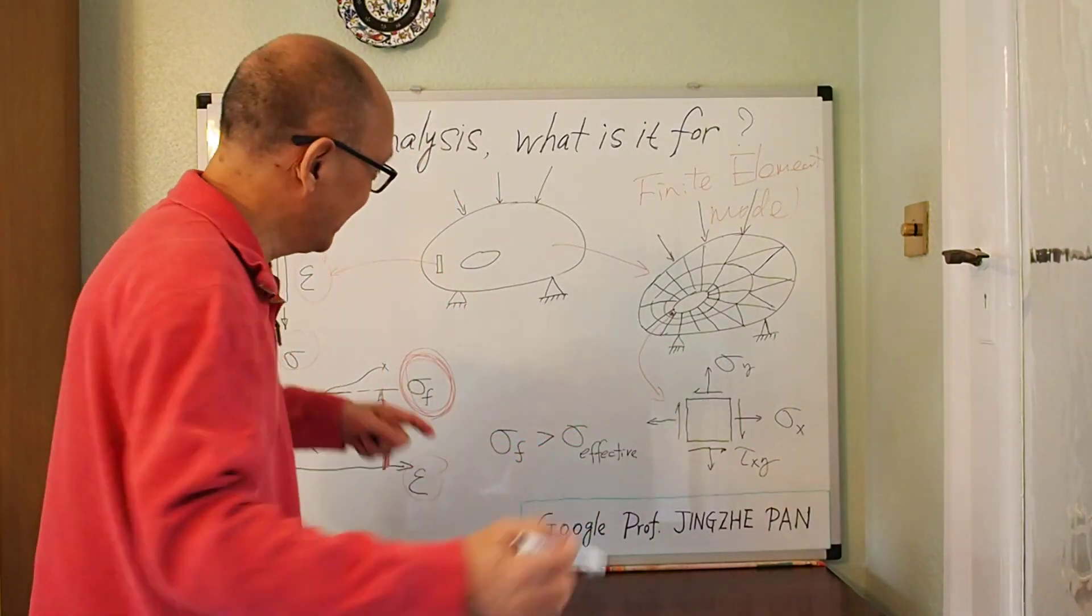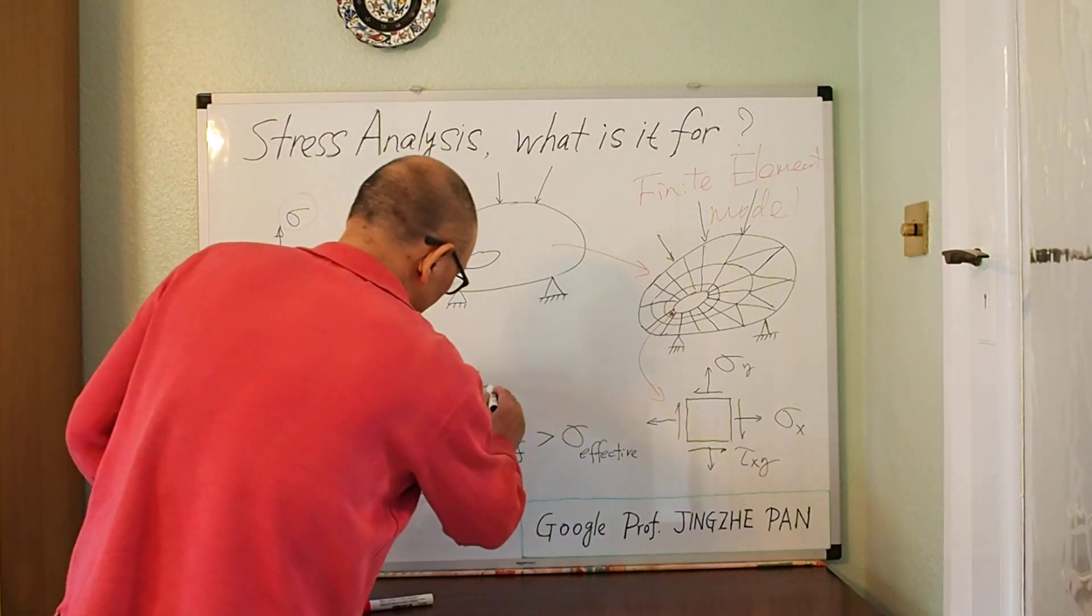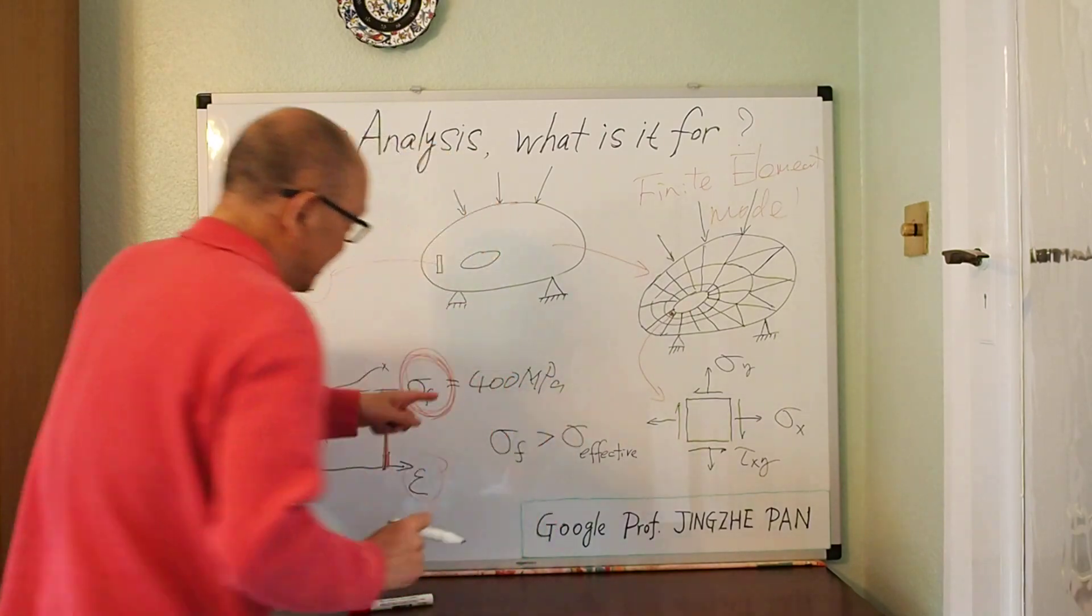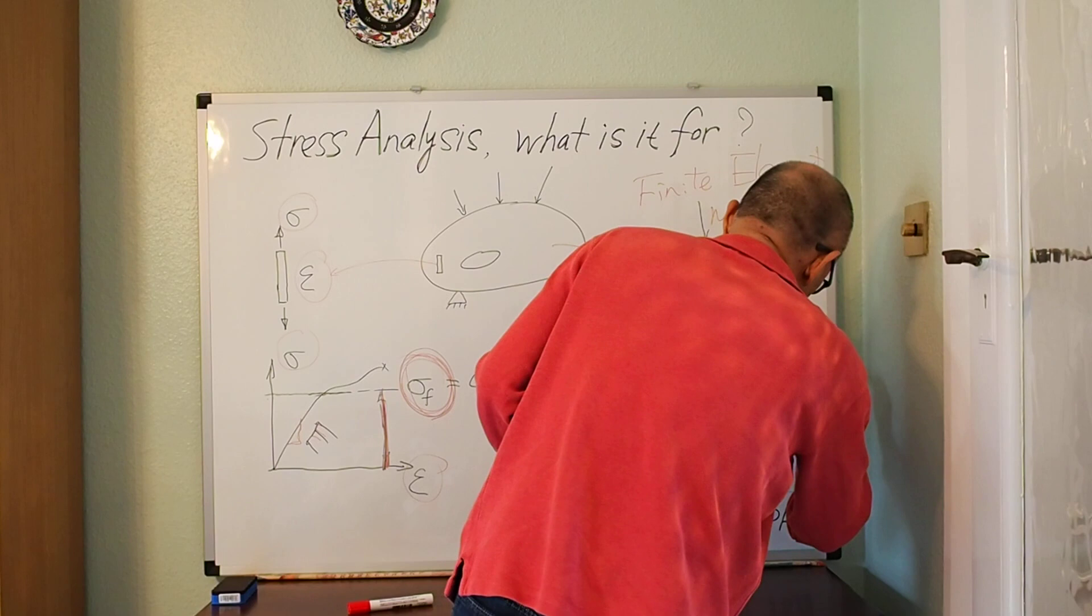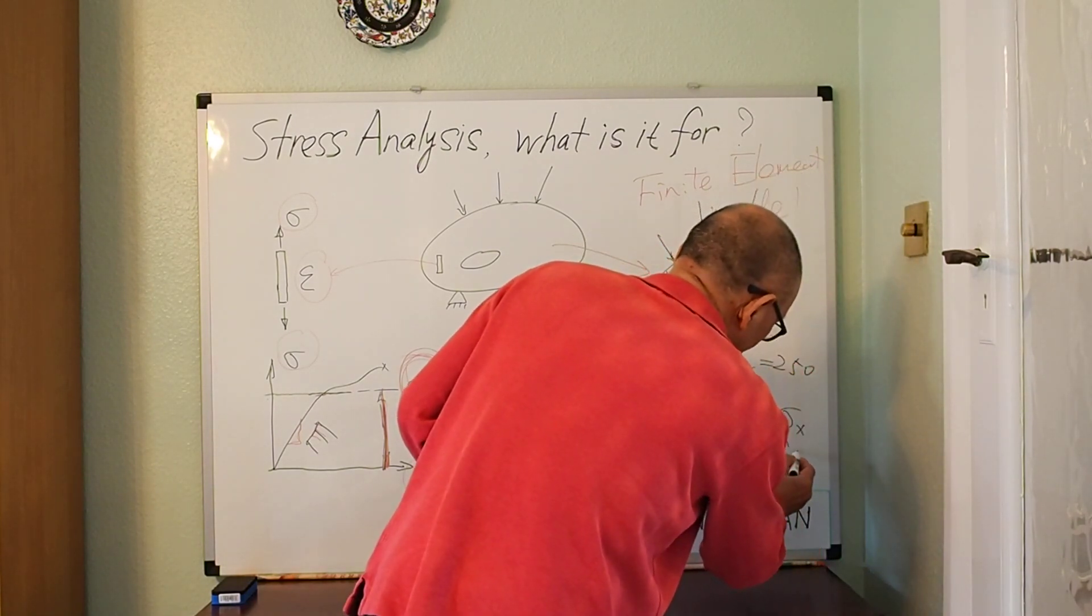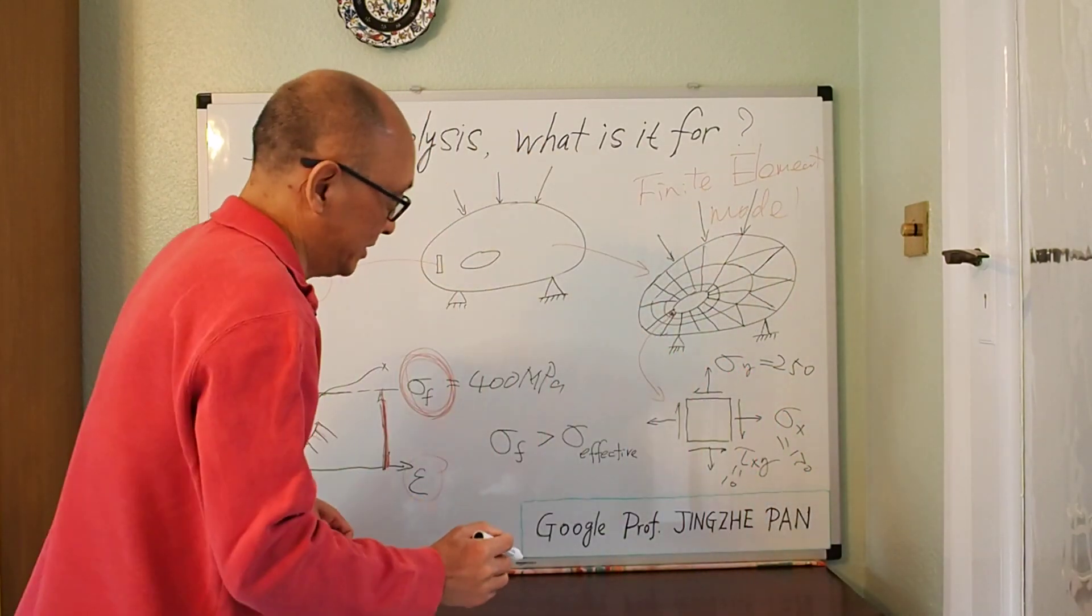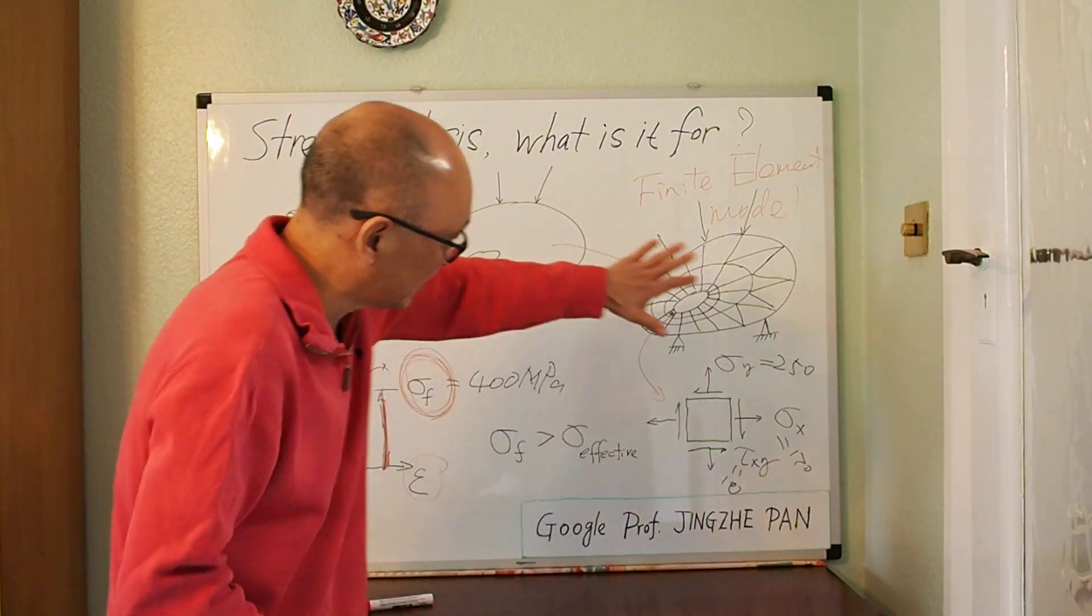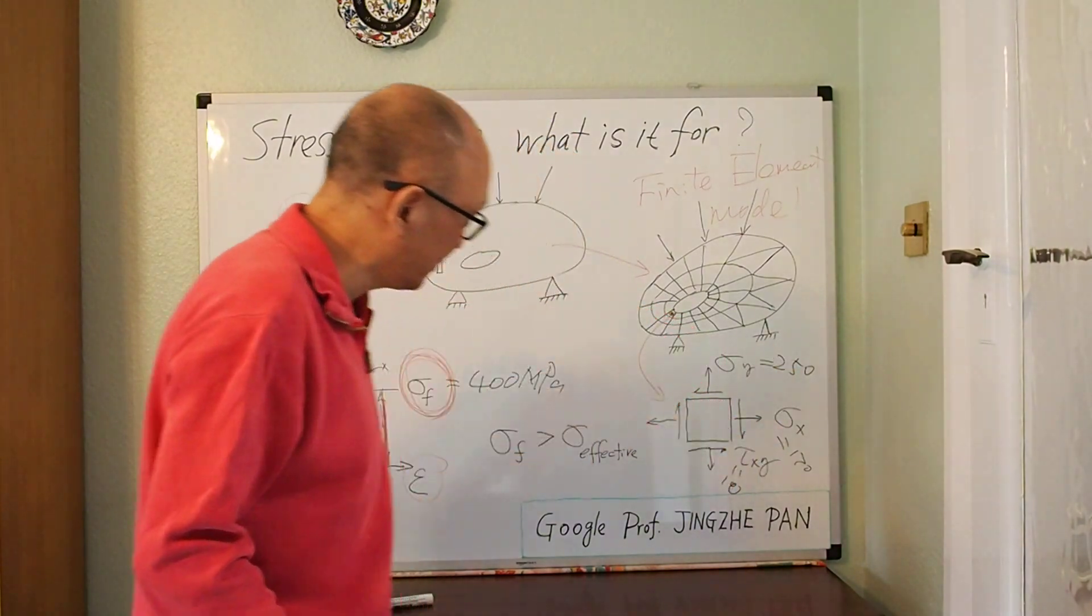So let me just take an arbitrary example. Let's say this stress value is 400 megapascals. I'm making this up, right? Just making a number there. And let's say this is 250, and this is 170, and this is 10. I'm just plugging some arbitrary numbers. I run this analysis. I got a set of stress values. This computer software gives me these arbitrary values.